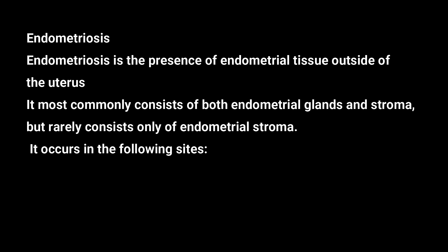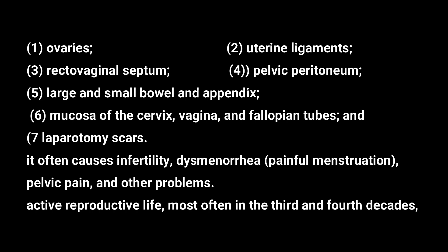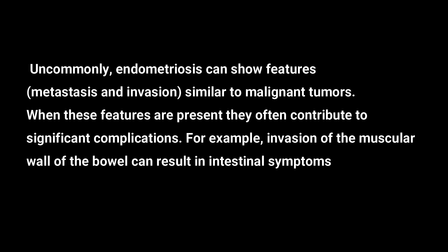In endometriosis, the most commonly involved sites are the ovaries, uterine ligaments, rectovaginal septum, pelvic peritoneum, large and small bowel, and appendix. The mucosa of the cervix, vagina, and fallopian tubes can also be involved. Endometriosis is also seen in laparotomy scars. It is responsible for infertility, dysmenorrhea (painful menstruation), and pelvic pain, commonly seen in the third and fourth decades of life. Endometriosis can invade surrounding organs; if the muscular wall of the intestine is infiltrated, intestinal complications such as obstruction can occur.